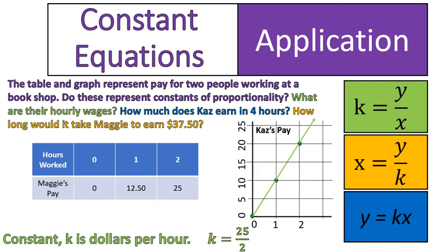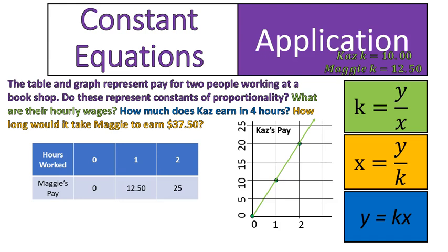We're going to now look at Maggie's work over there. We're going to take 25 divided by 2. Again, that's dollars per hour. And you'll see that it's $12.50. Again, we could look one hour, $12.50. So we know that's the unit rate. That's how much she's earning per hour. So it's literally written right into these graphs, the graph and table. But it's also good for us to do some math to calculate those. So their hourly wages are as you see. Kaz makes $10 an hour. Maggie earns $12.50 an hour.